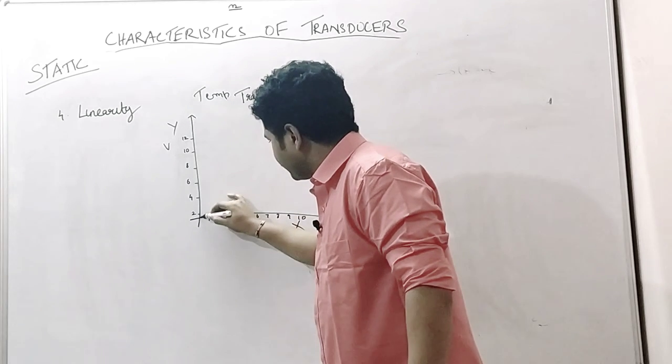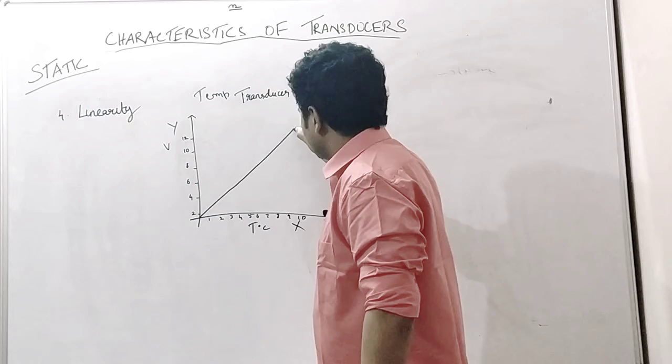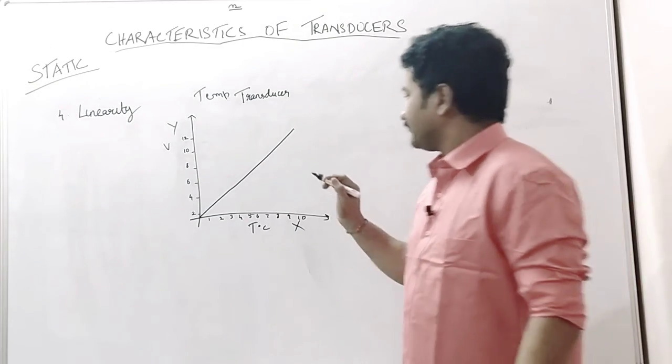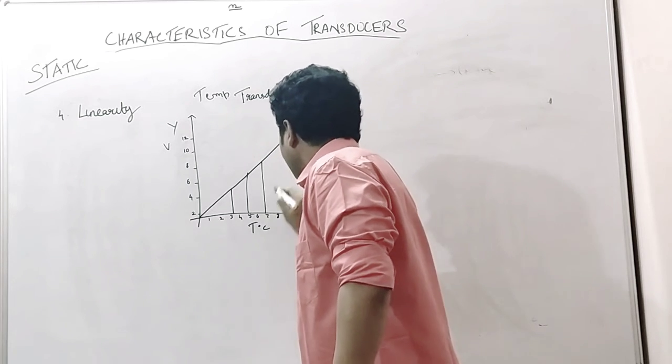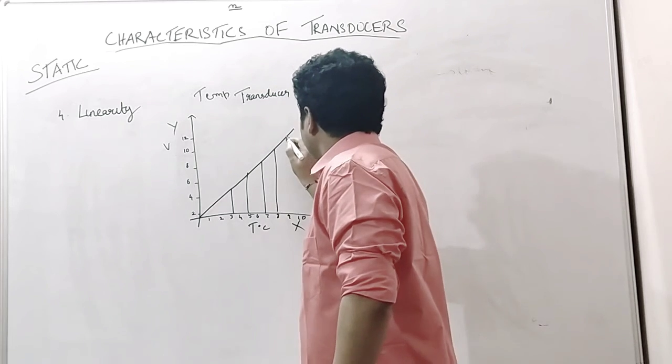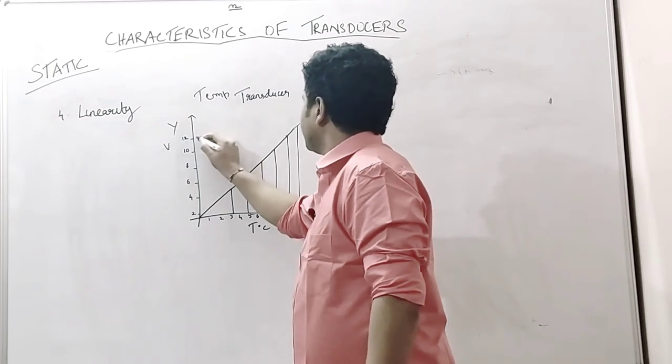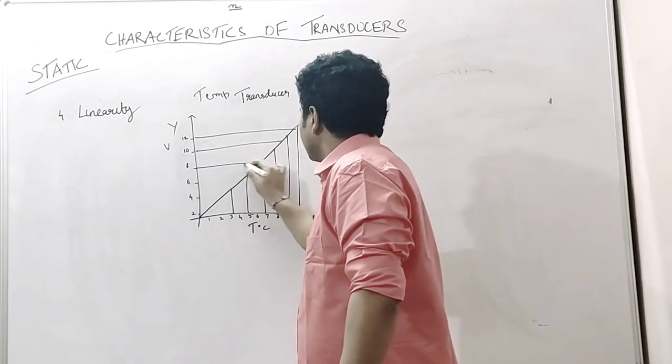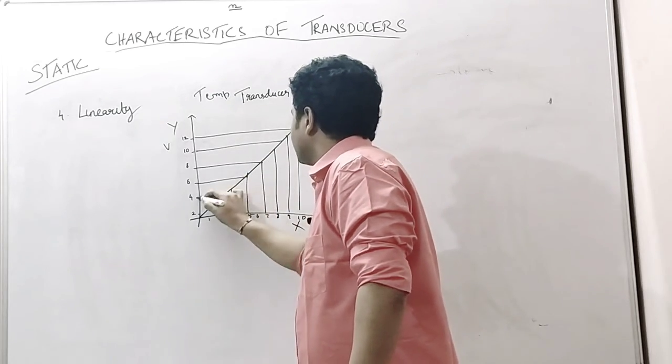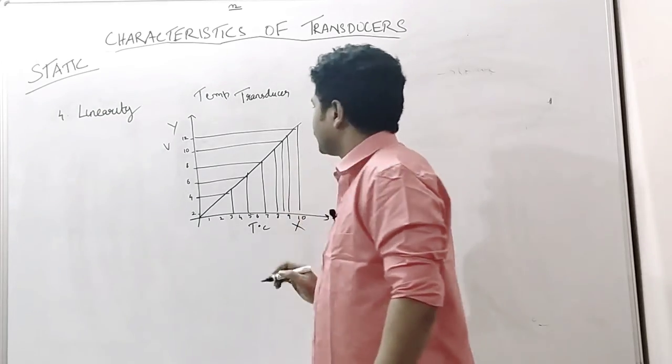We are getting a straight line like this. When we plot the graph for varying temperatures, we get corresponding voltage.